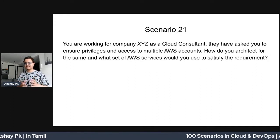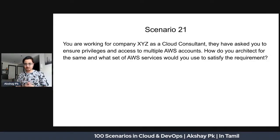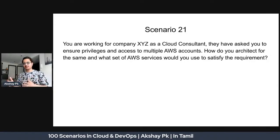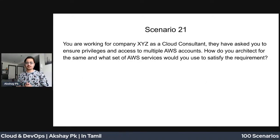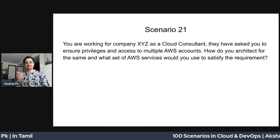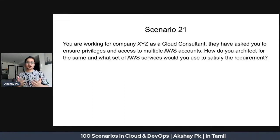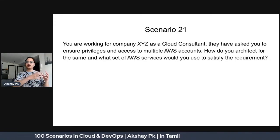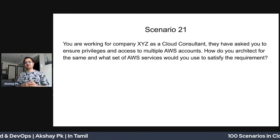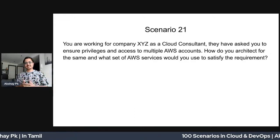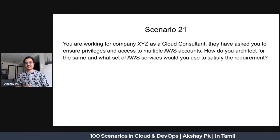Now there are multiple AWS accounts, and we need a strategy. The first service that comes to mind is AWS Organizations. With AWS Organizations, you have multiple organizational units, and under each organizational unit, multiple accounts — so there are three levels in the structure.